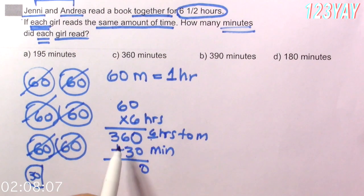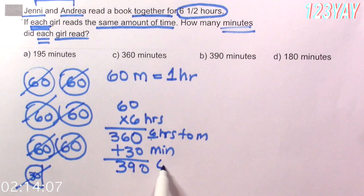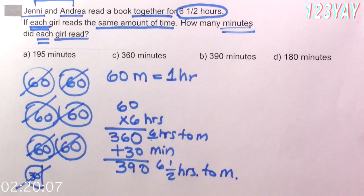Let's add these 30 minutes. And 0 plus 0, 0. 6 plus 3, 9, 3. We added this up. This is 6 and a half hours in minutes. Are we done? No.